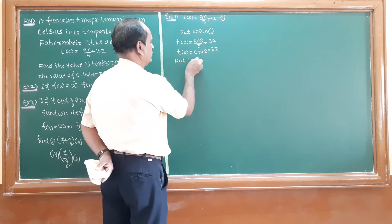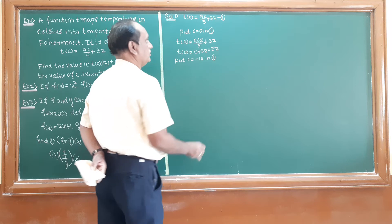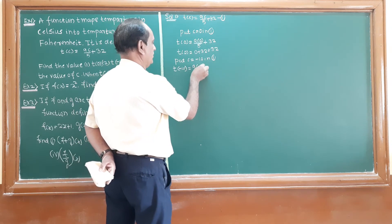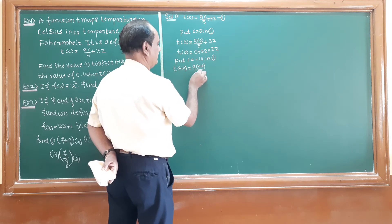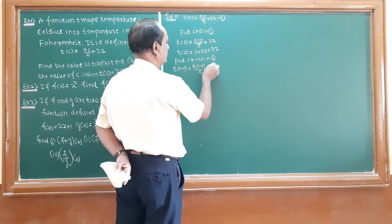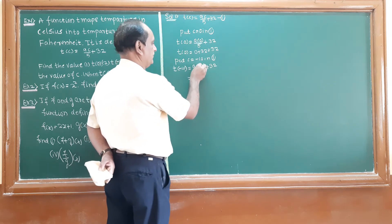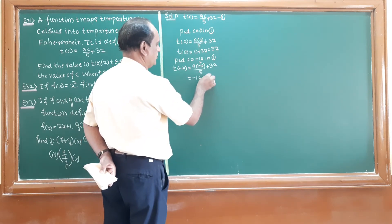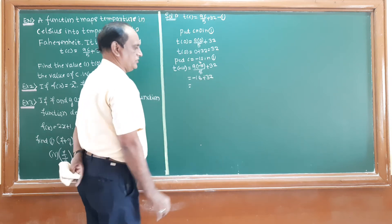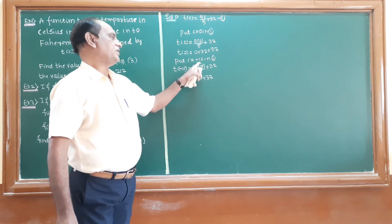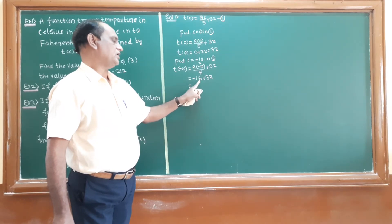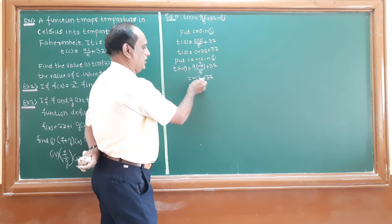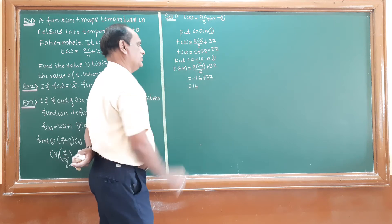For the second case, put C = -10 into equation number one. T(-10) = 9 multiplied by (-10), divided by 5, plus 32. That gives -90/5 + 32, which is -18 + 32 = 14.